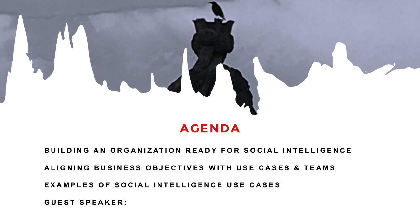We're going to break this down into four separate sections. The first section will concentrate on how to build a social organization and what types exist. Then we'll align those teams with use cases and business objectives so the team is prepared to accept social intelligence and distribute it across the organization. Then we'll get into some hypothetical social intelligence use cases.